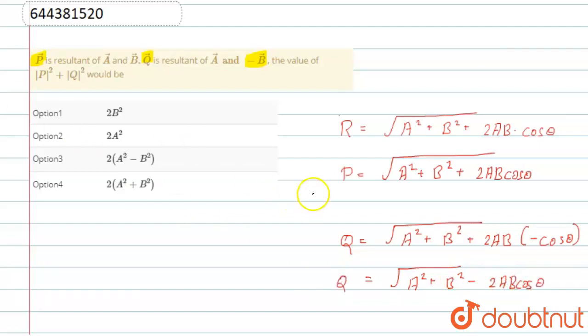Now what we can do is, we can do a square on both the sides and it will become P square is equal to root over, sorry, now root over will be removed.